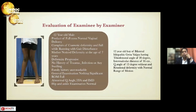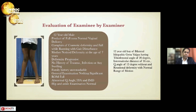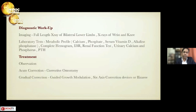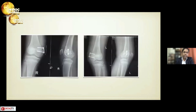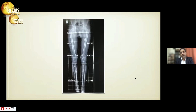Case one: a 12-year-old boy with bilateral idiopathic genu valgus, tibiofemoral angle of 20 degrees, intermallolar distance of 16 cm, Q-angle of 15 degrees, no rotational component, and normal range of motion. As he had an immature skeleton with no rotational or sagittal component, I chose guided growth. Full correction was achieved, as shown in the final follow-up X-rays.